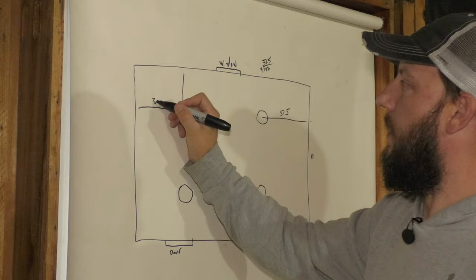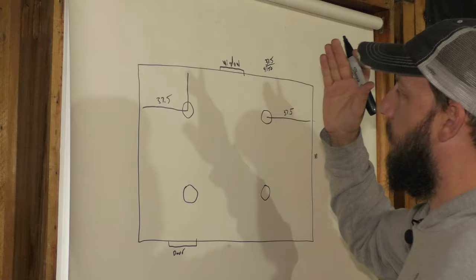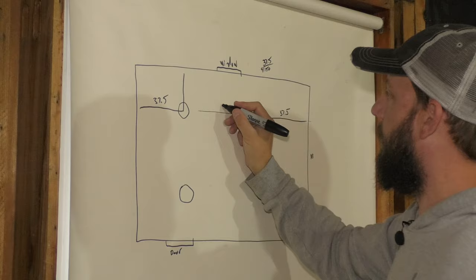Then if you take that number and you multiply it by two, you'll get 75. That should be the distance in between the lights. 75 inches from center to center.